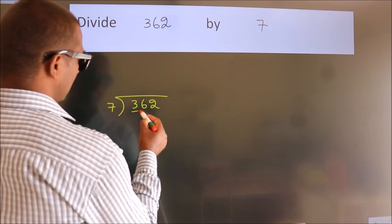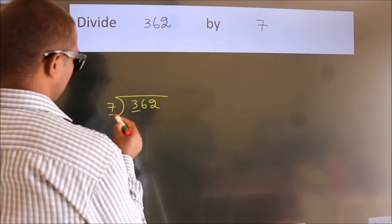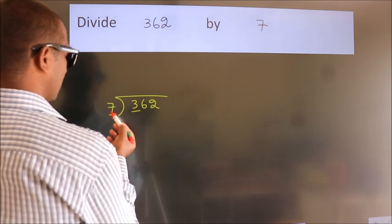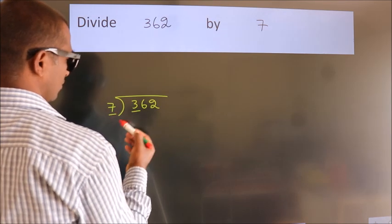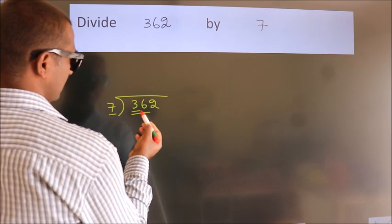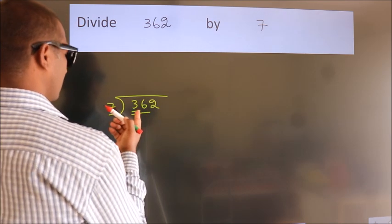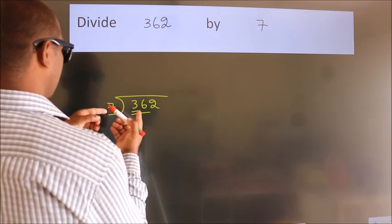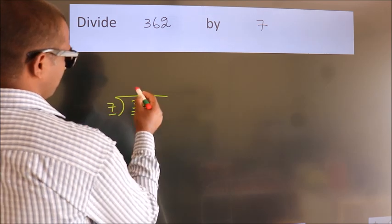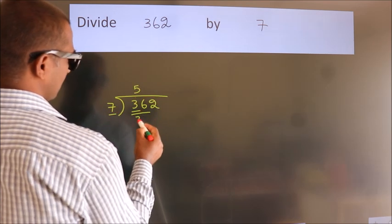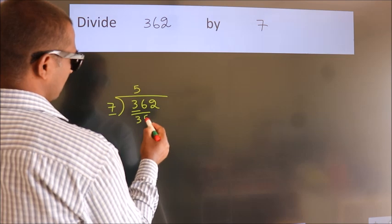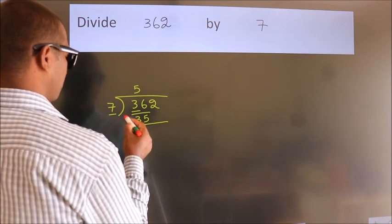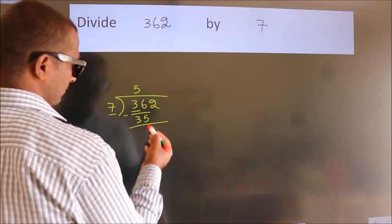Here we have 3, here 7. 3 is smaller than 7, so we should take two numbers: 36. A number close to 36 in the 7 table is 7 fives 35. Now we subtract and we get 1.